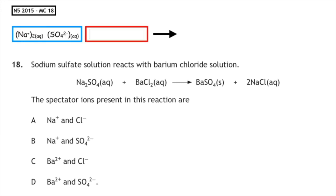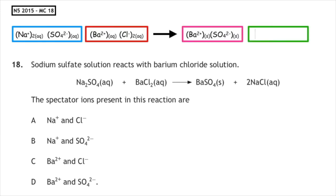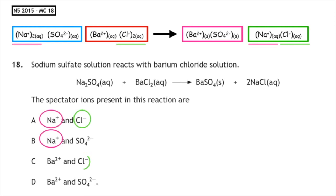This past paper question is from the National 5 2015 multiple choice question 18: sodium sulphate solution reacts with barium chloride solution. The spectator ions present in the reaction are — again, we look at our product side, we look for the aqueous solution. That's our Na⁺ and Cl⁻. So the correct answer to this is multiple choice answer A.